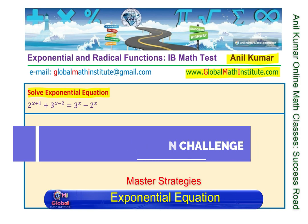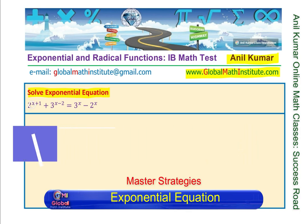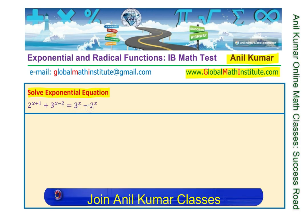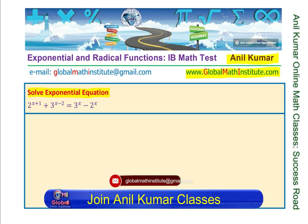The question before us is 2^(x+1) + 3^(x-2) = 3^x - 2^x. We need to solve this equation.